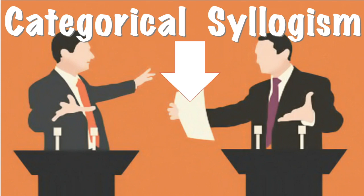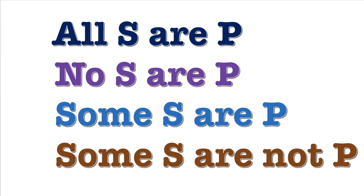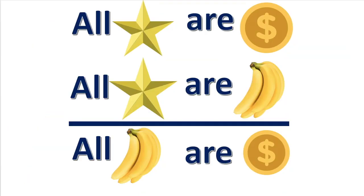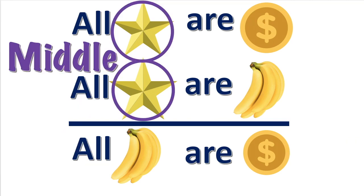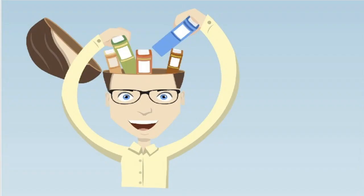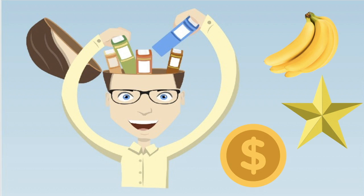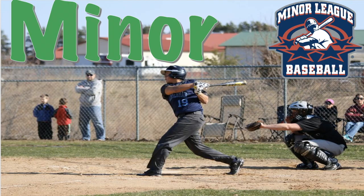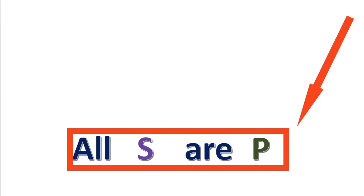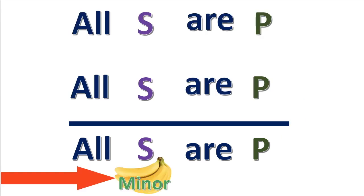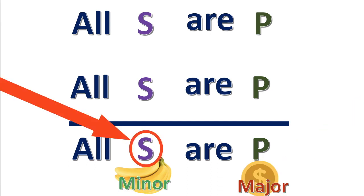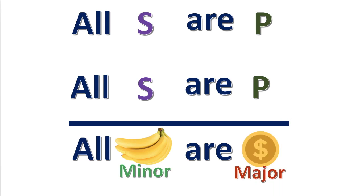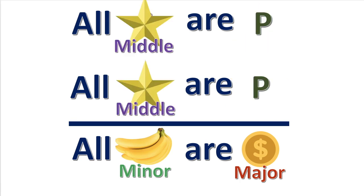A categorical syllogism is an argument that has three categorical propositions. The argument will have three different terms, and each term will appear twice in the argument. The three terms are named the middle, the minor, and the major terms. An easy way to remember these names is to think about baseball — you have the major leagues, the minor leagues, and there's always something in the middle. The conclusion will always contain the minor term and the major term. The subject of the conclusion is called the minor term, and the predicate of the conclusion is the major term. The term that is repeated in the premises is called the middle term.